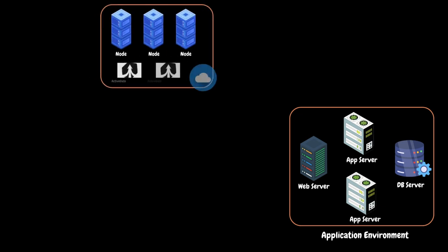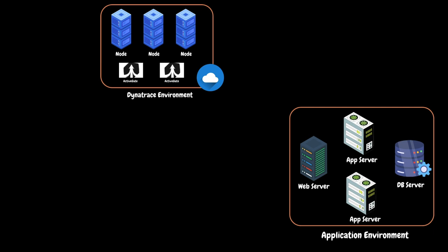For Dynatrace to monitor the application and manage all the data, we need a Dynatrace environment which can be either the managed model or the SaaS model. As I explained in the previous video, the main difference between these models is ownership. Apart from that, the components within the Dynatrace environment remain the same. For our discussion purposes, let's assume we are going to use the SaaS deployment model.